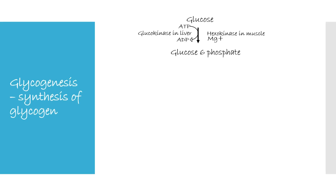The second step is glucose-6-phosphate being converted to glucose-1-phosphate. The phosphorus group at C6 of glucose is transferred to C1. This reaction is catalyzed by phosphoglucomutase enzyme. Mutase transfers the functional group within the same molecule. Since the substrate and product have the same energy, this reaction is reversible and requires magnesium for its activity.